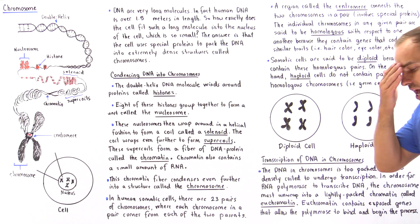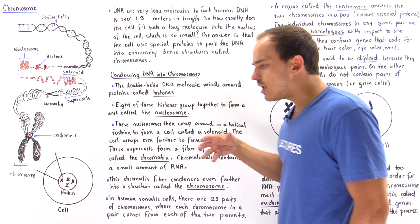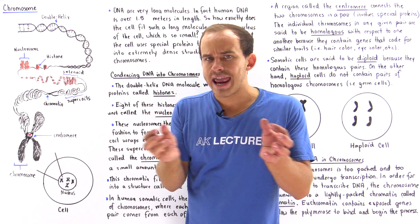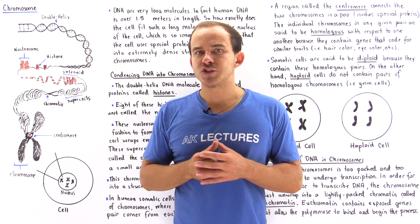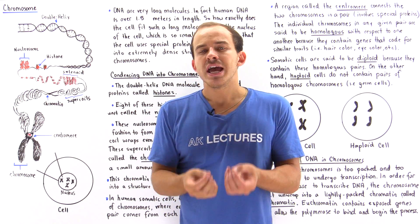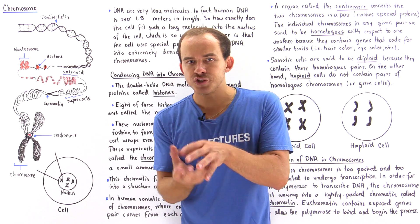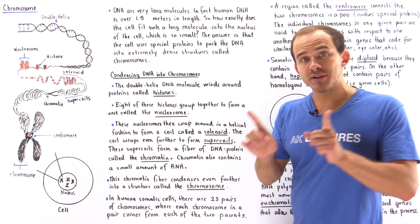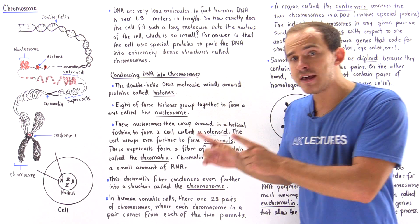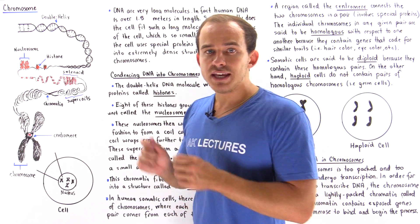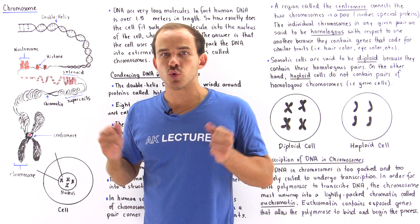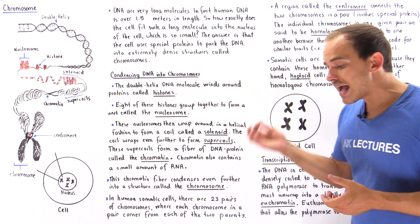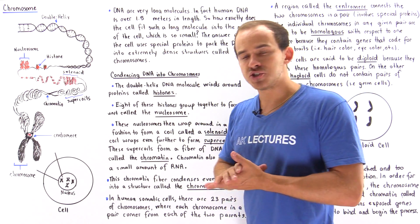The question is: how exactly does the cell accomplish this? How does the cell take such a long biological molecule and place it into the very small region known as the nucleus? In fact, the human cell is capable of fitting 46 of these individual DNA molecules into a single nucleus.